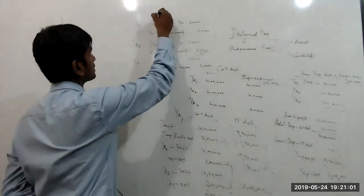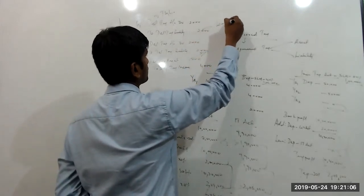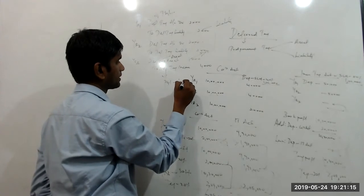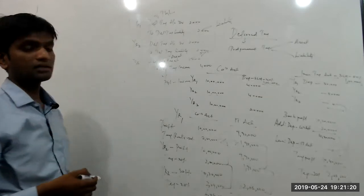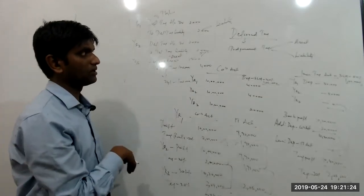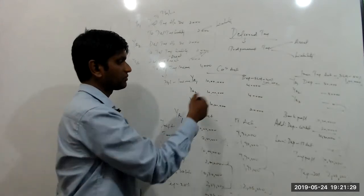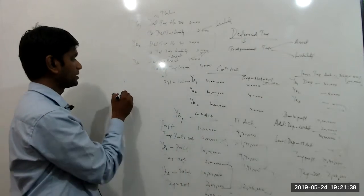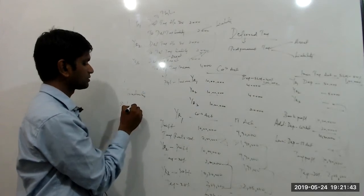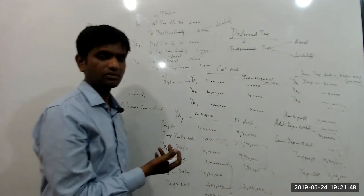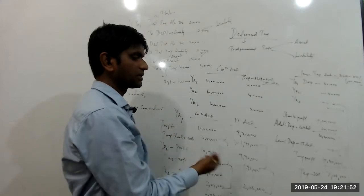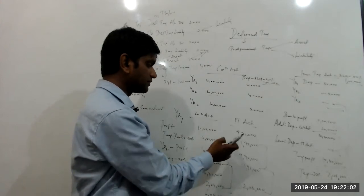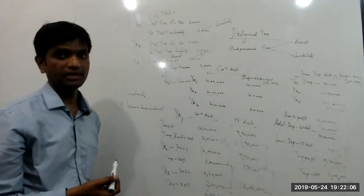The deferred tax asset will go to the P&L account. Deferred tax liability goes to the liability part of the balance sheet in Years 1 and 2. In Year 3, the deferred tax asset goes to the asset side and to the P&L account as indirect income. These are the accounting entries. The concept of deferred tax is the same, but the number of line items can vary — it is not only depreciation that causes a timing difference in tax, but there can also be other items like gratuity and leave encashment. These are commonly used line items that cause a temporary timing difference in the tax amounts paid.